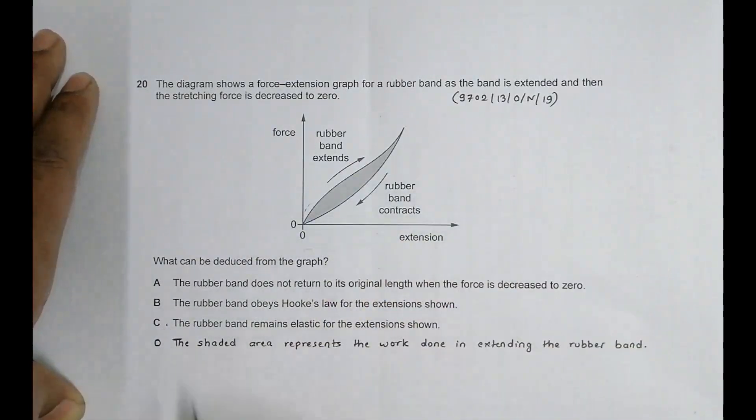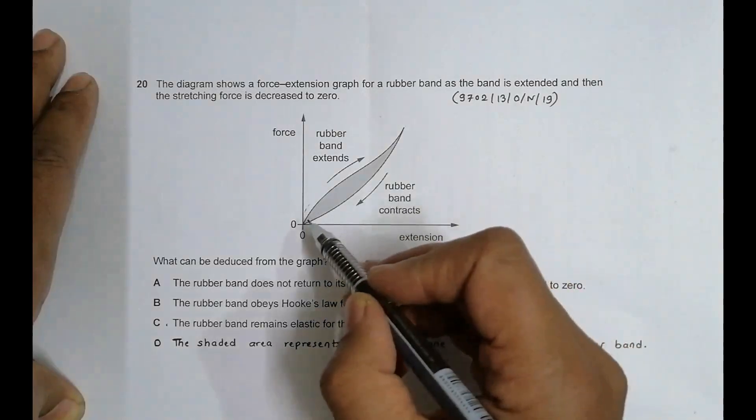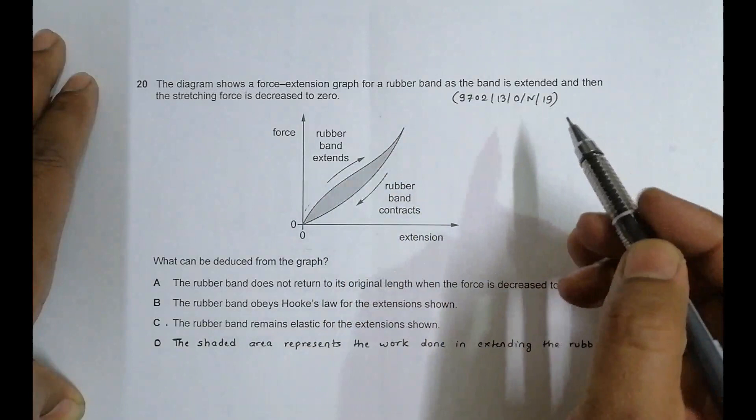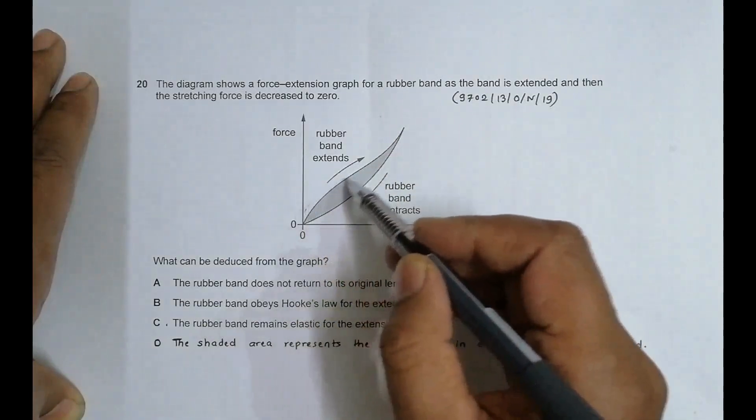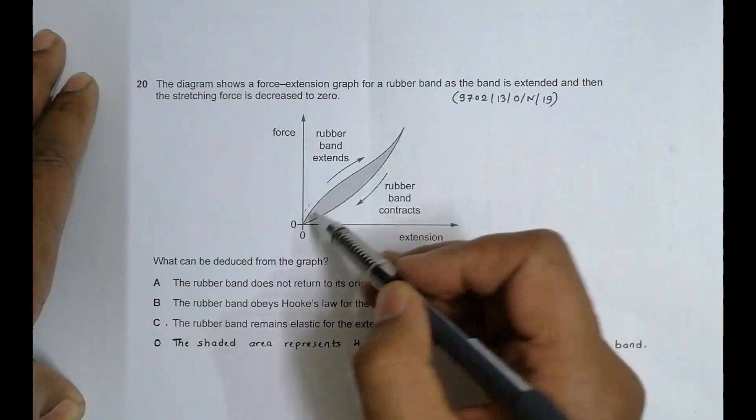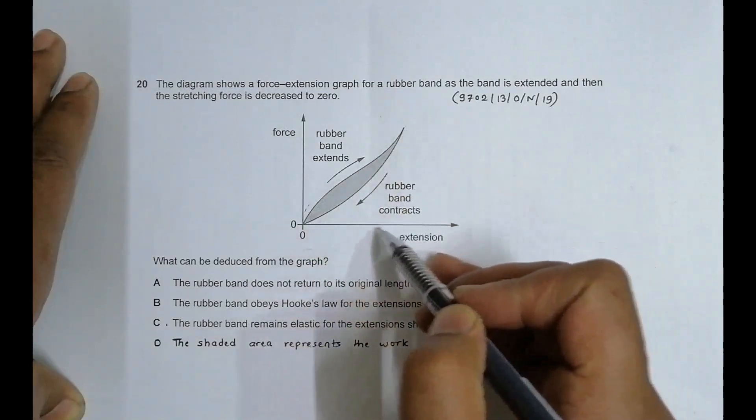Let's go for choice D: The shaded area represents the work done in extending the rubber band. This is not true because the work done is given by the whole area under the curve during the extension.